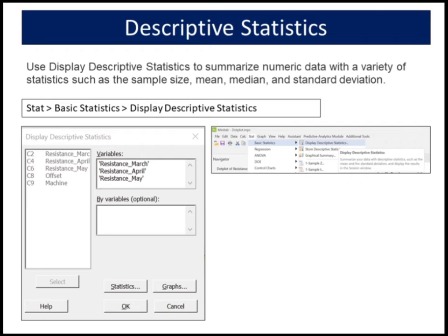Choose stat, basic statistics, display descriptive statistics. In variable, enter resistance March, resistance April, resistance May.